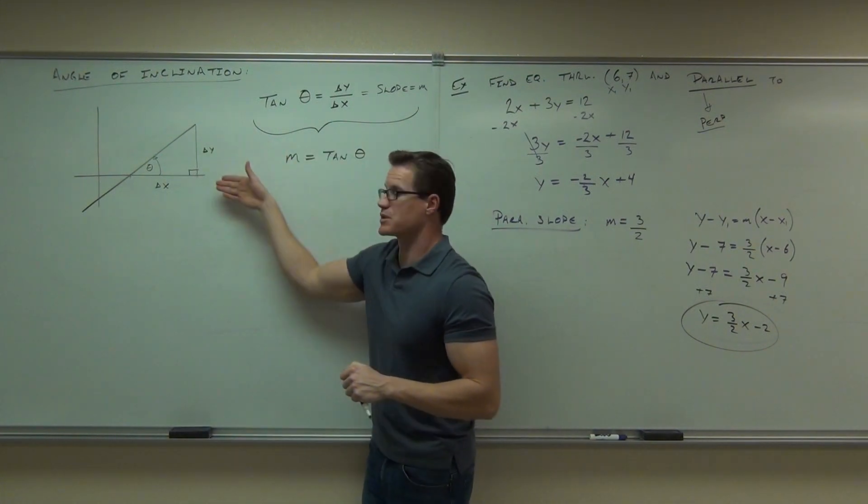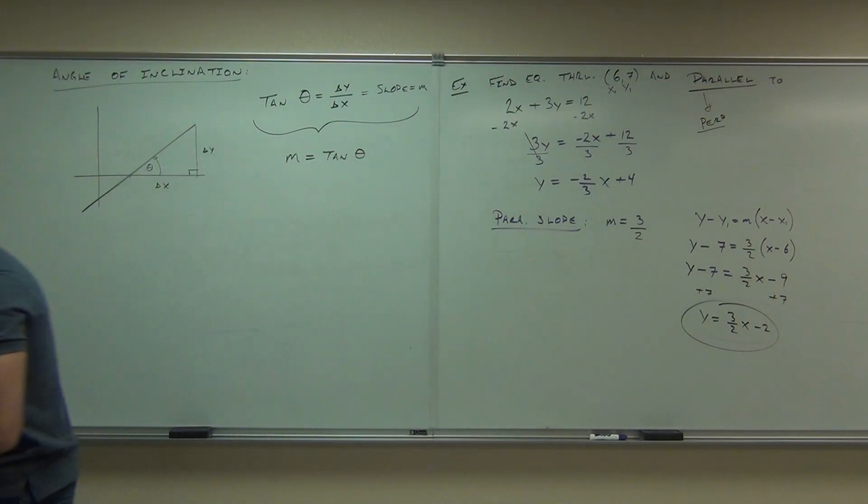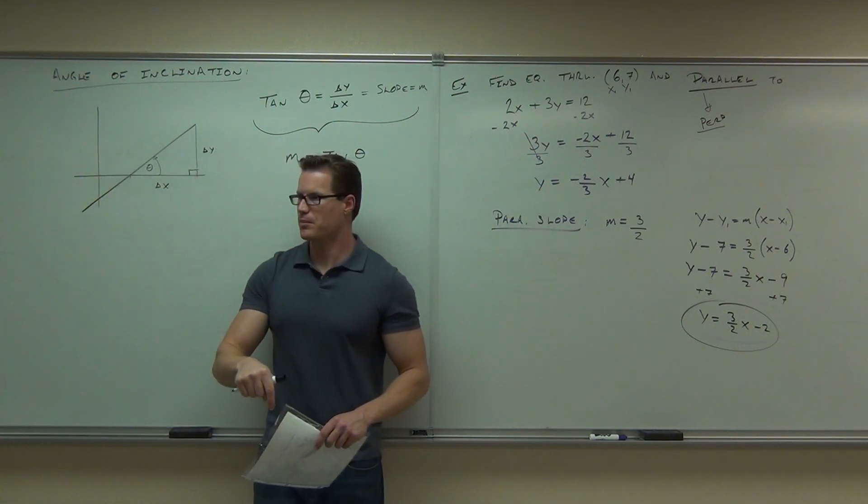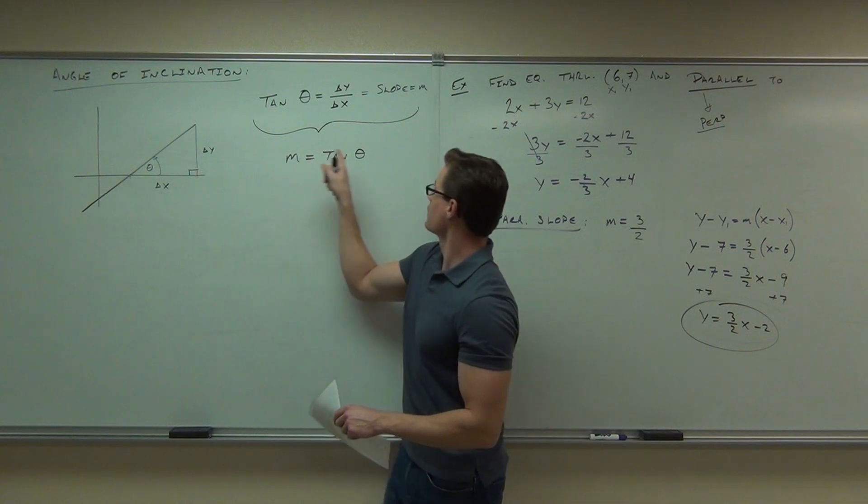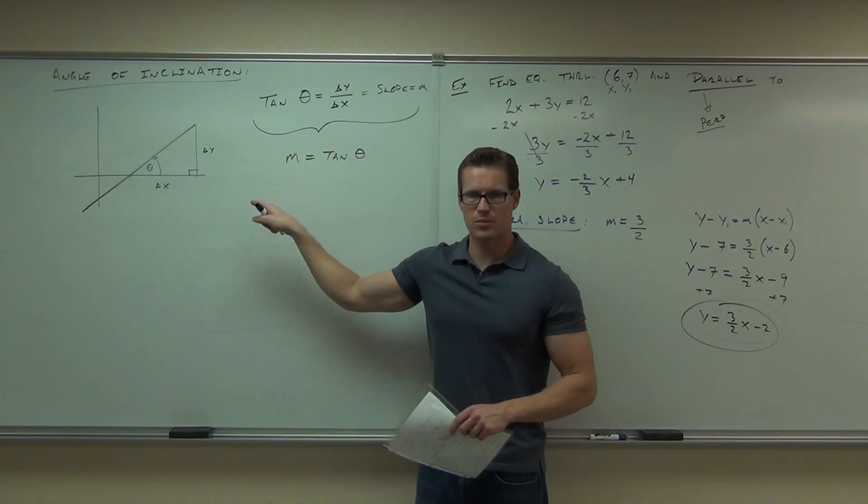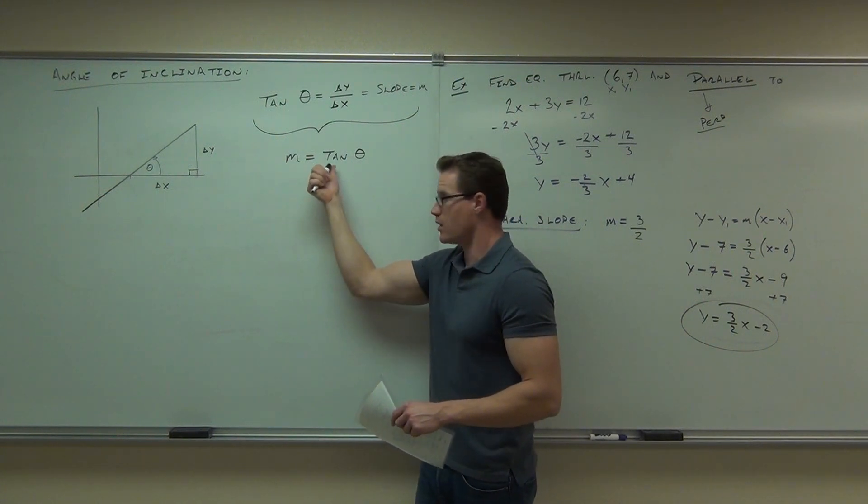But here's the cool thing. What do we already define as change in y over change in x or rise over run? What do we already define that as? So then we have this relationship. We know that tan theta, well that's delta y over delta x. But this is also the same thing as slope or m. If you bring all this together, slope is equal to tan theta. Do you see the relationship between your slope and your angle of inclination?